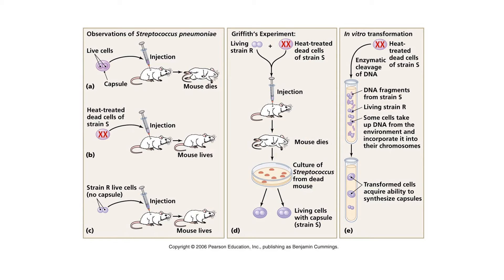Neither of the things he injected the mice with caused pneumonia on their own, but somehow the mice ended up with pneumonia. When he cultured the bacteria from the dead mice, he found living S strain — he had never given them living S strain; he had only given them heat-killed S strain and R strain.